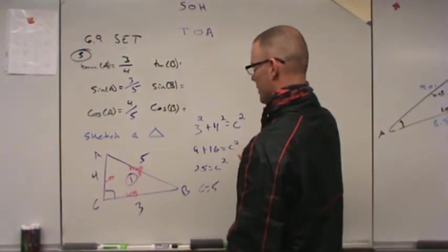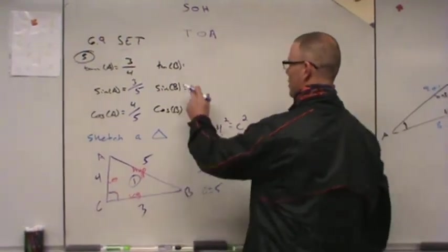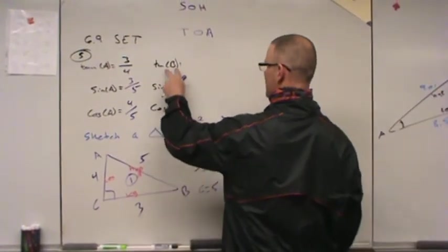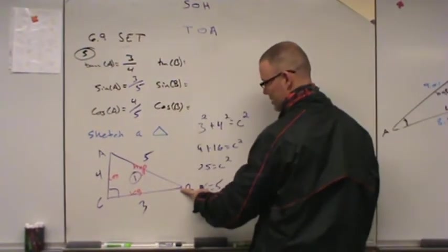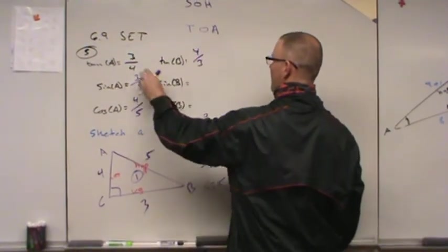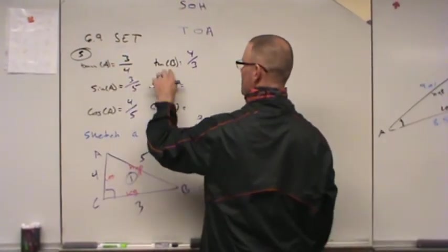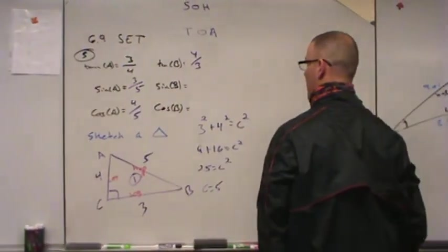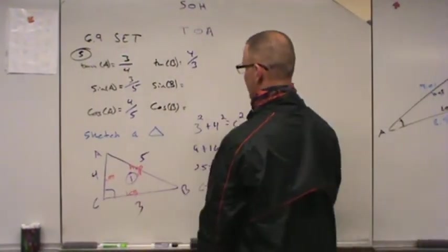The cosine of A is adjacent over hypotenuse. And then now I need to create, excuse me, create my other three ratios. Pretty basic. What I remember is the tangent of B. The tangent of B is opposite over adjacent, 4 over 3. Or the fact that tangent of A and tangent of B, they're inverses of each other. That's what I remember. So I might not even have had to look back at the triangle.